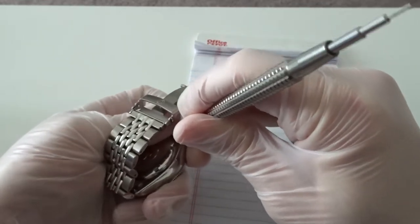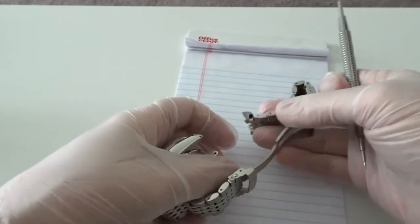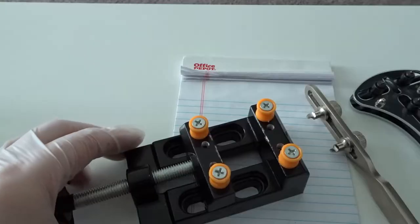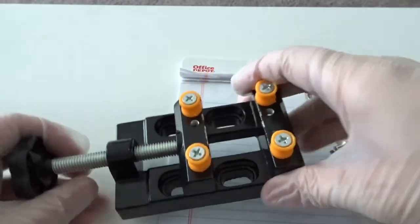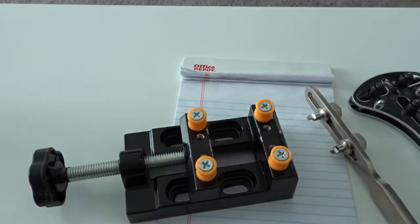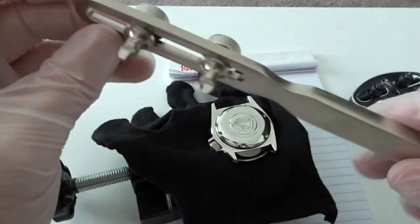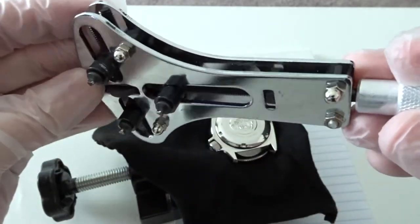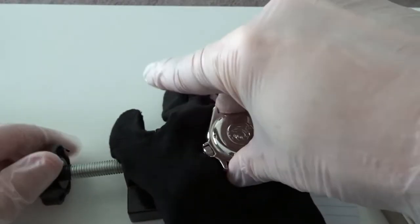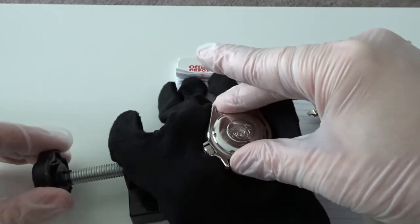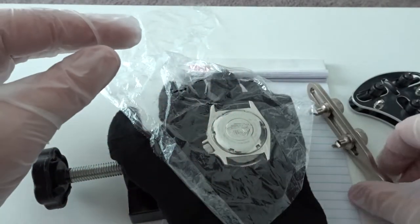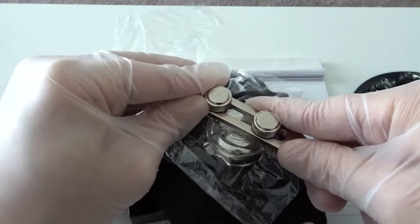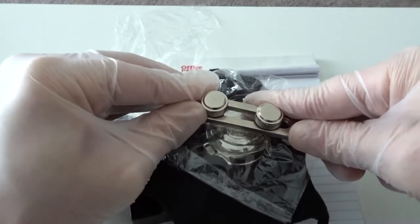Step one is to prep the watch by taking off the bracelet or strap and placing it in a case back removal vise so you can unscrew the case back. You also need a case back removal tool. I have a couple different types that I use depending on how tight the case back is screwed on. I want to mention that I have scratched many a case back while trying to remove them, so be careful and it helps to place a plastic film on it to try to prevent a bad scratch if your tool slips.